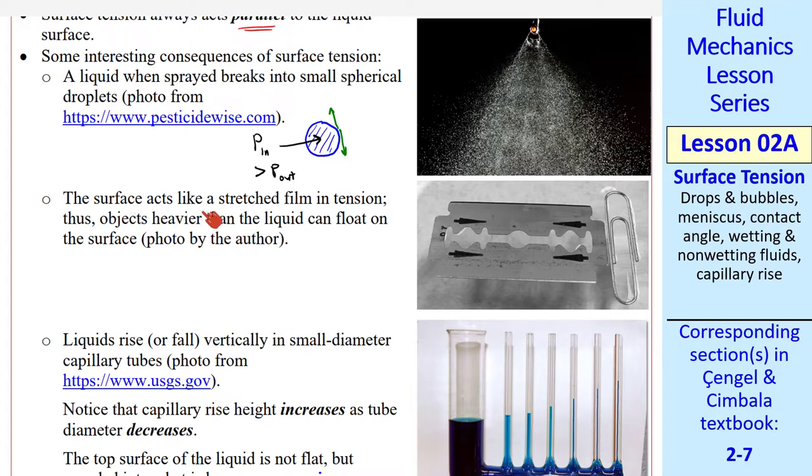Another consequence is that this surface acts like a stretched film in tension, so objects heavier than the liquid can float. Even a razor blade or a paper clip. Now we know that the density of steel is much bigger than that of water. Yet, if you set these objects gently on some water, they'll float. Again, that's because of surface tension.